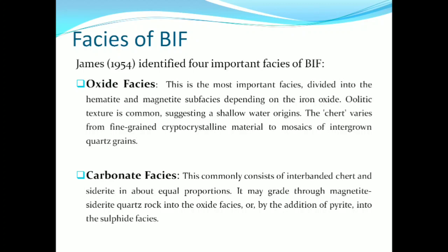Next, the facies of BIF. In general, facies indicate the environment of formation. James (1954) identified four important facies of BIF. The first is oxide facies, the most important, divided into hematite and magnetite sub-facies depending on the iron oxide. Oolitic texture is very common, which suggests a shallow marine origin; the chert varies from fine-grained cryptocrystalline material to mosaics of intergrown quartz grains.